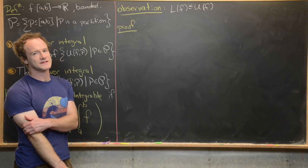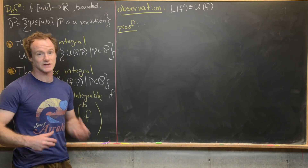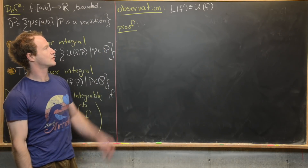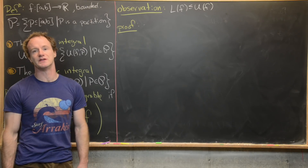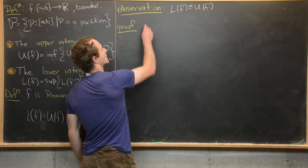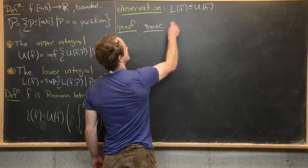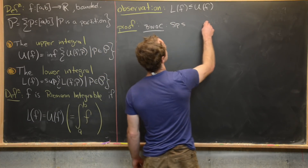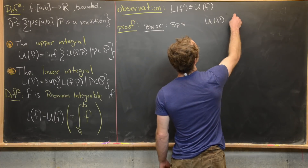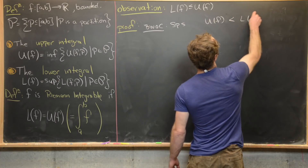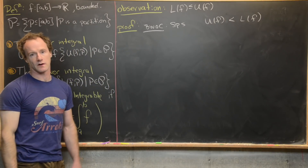We're going to start by proving a pretty simple observation, but I think this is important to see the kind of tools we'll use. We're going to prove that the lower integral of f is always less than or equal to the upper integral of f. We're going to do this by way of contradiction — supposing that the upper integral of f is strictly less than the lower integral of f, and then showing something goes wrong.